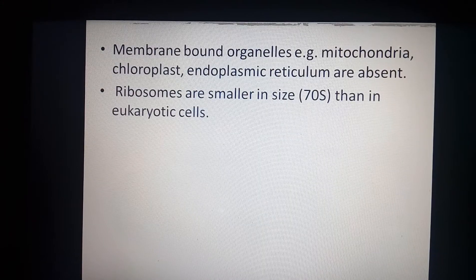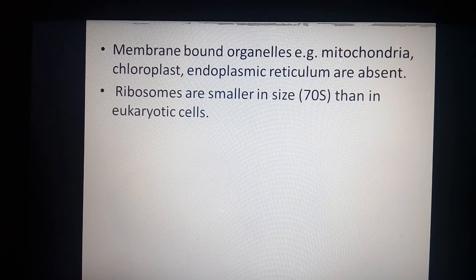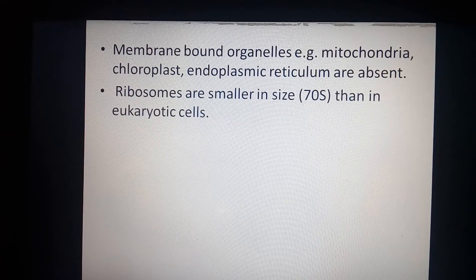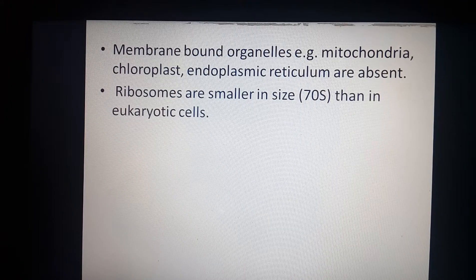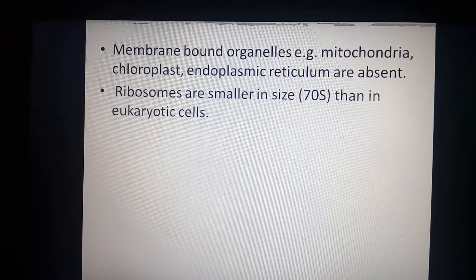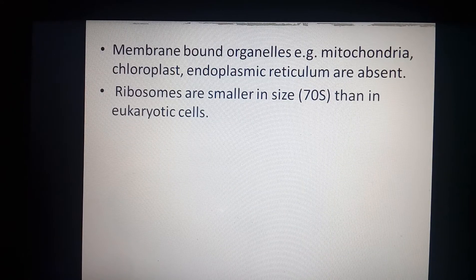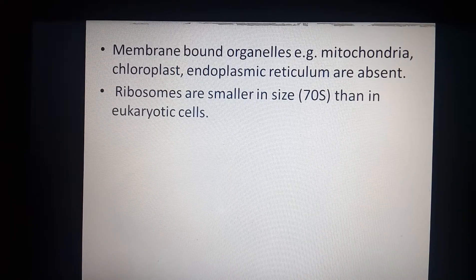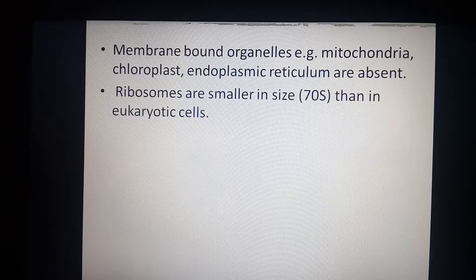Ribosomes are smaller in size compared to eukaryotic cells. In eukaryotic cells there is an 80S type of ribosome, and in prokaryotic cells there is a 70S type. The 70S stands for Svedberg unit, also called sedimentation coefficient. This 70S ribosome is formed by two subunits: larger 50S and smaller 30S. Though 50+30=80, the combined sedimentation coefficient changes to 70S. Ribosomes are mainly involved in protein synthesis.